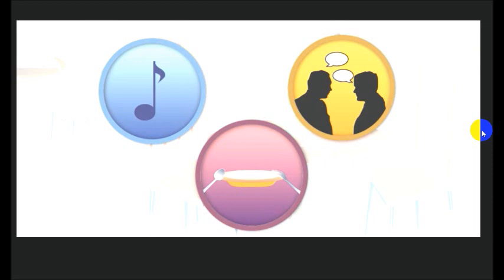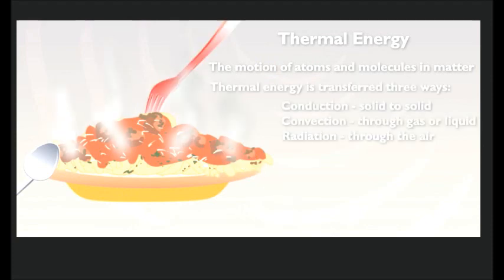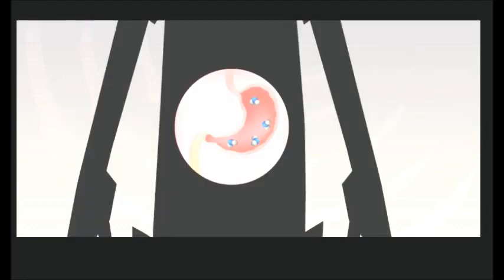The music, the chatter of other diners, the clank of plates and silverware — all sound. Food gives you energy. There's thermal energy and chemical energy in a plate of food. Thermal energy is heat and it's kinetic — it's the motion of atoms and molecules in matter. The food also stores chemical energy: potential energy in chemical compounds waiting to be released. When we eat food, our body burns it and releases that stored chemical energy, turning it into thermal energy. Cars work the same way — they burn fuel and turn it into thermal and mechanical energy.